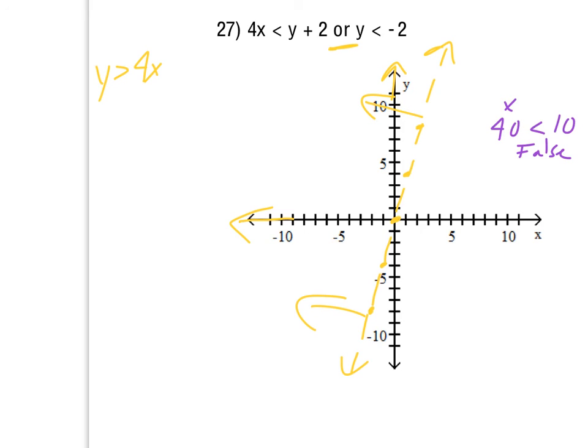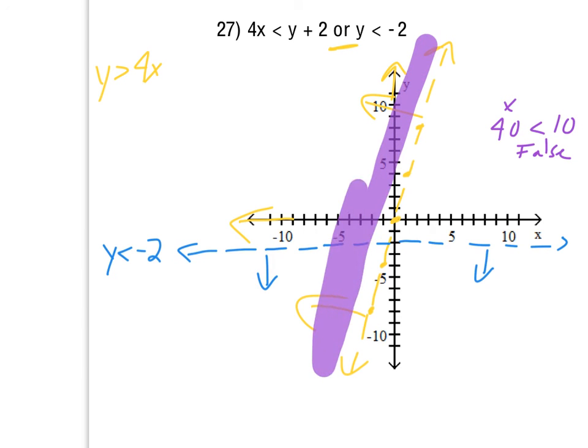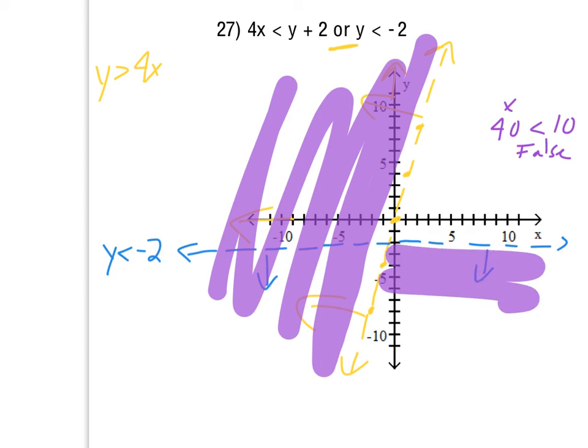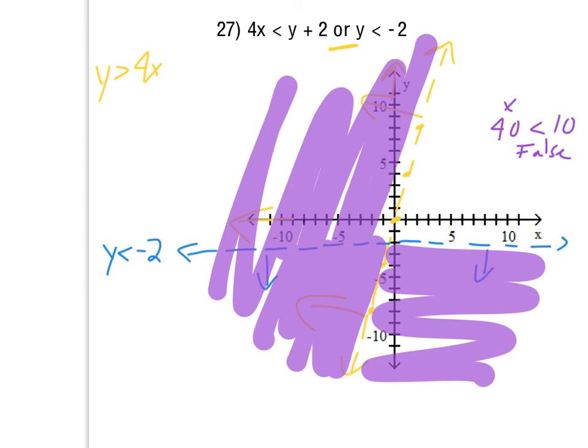The other one, y is less than negative 2. Again, this is going to be another horizontal line. This one will be dashed, however. Negative 2 is down here. So that's the y is less than negative 2. And again, y is less than that as you go down the y-axis. So everything that is covered by either one of those gets shaded. So everything over here, and everything down here. The only area that doesn't get shaded in is this one over here. It's not covered by anything. So that's what that one would look like.